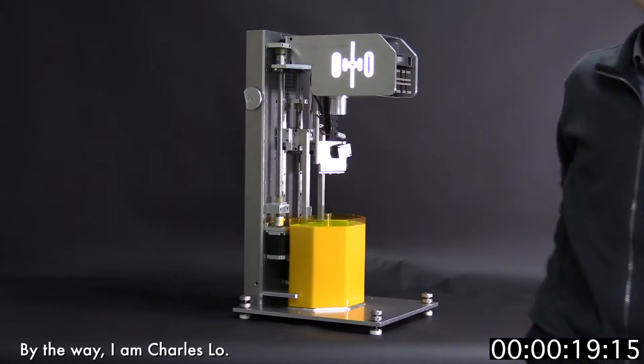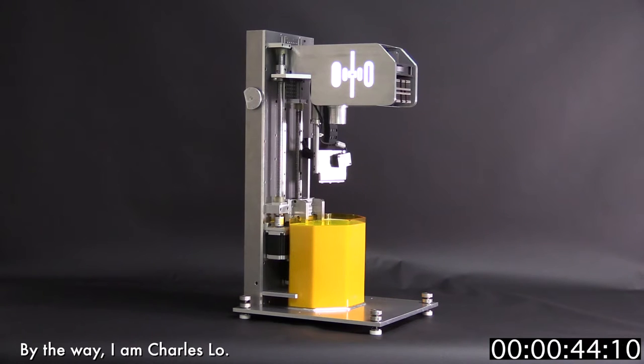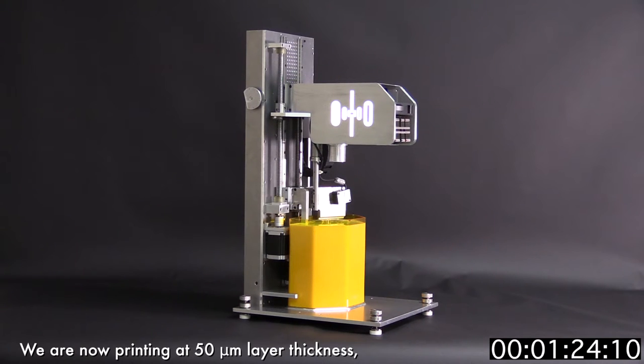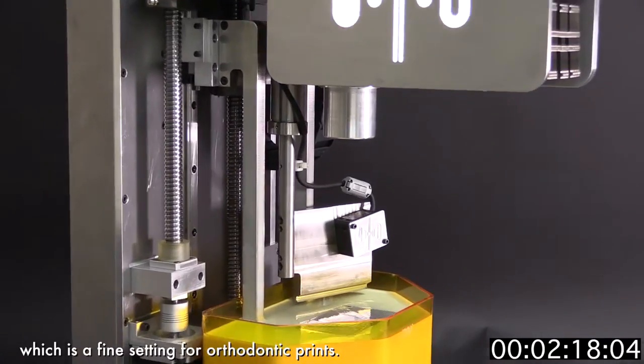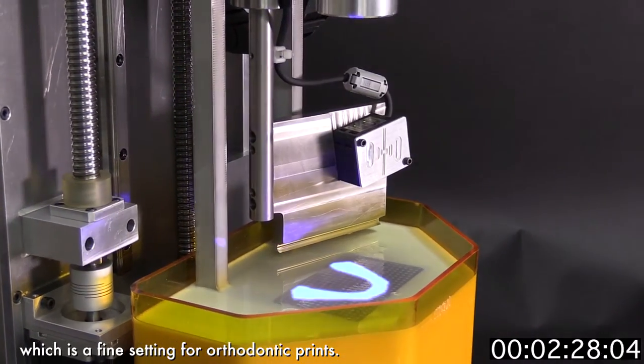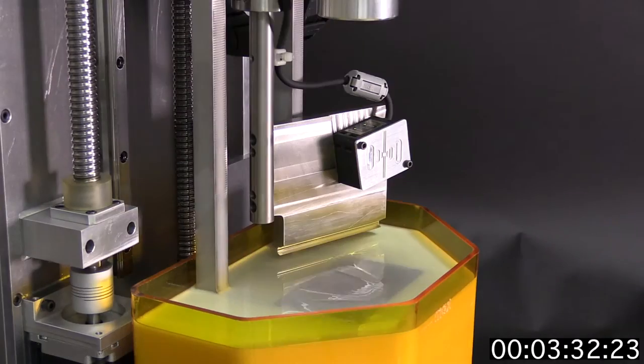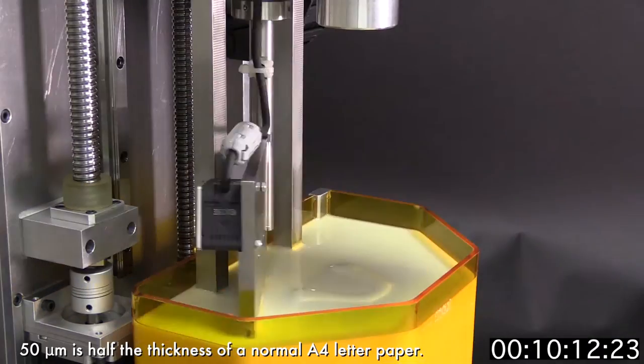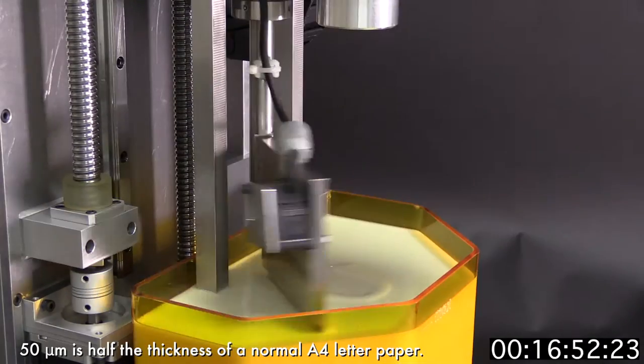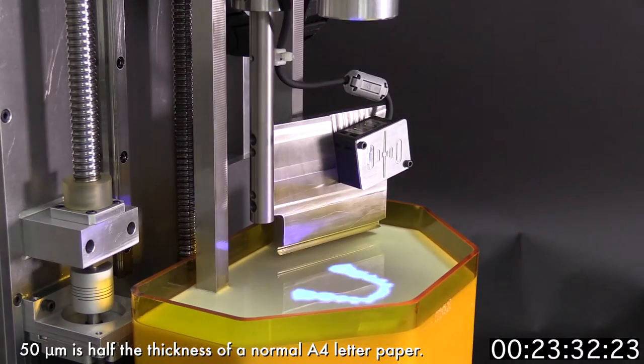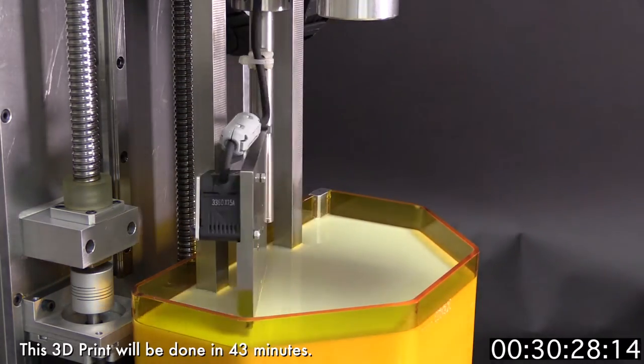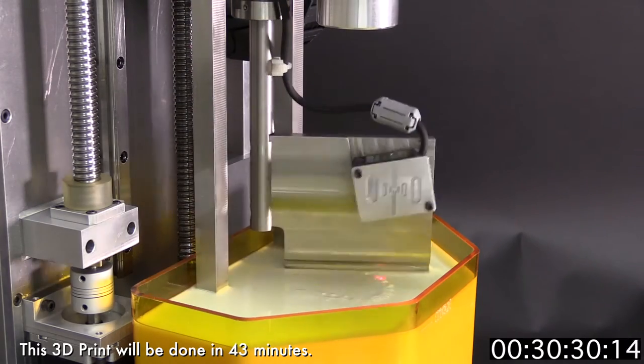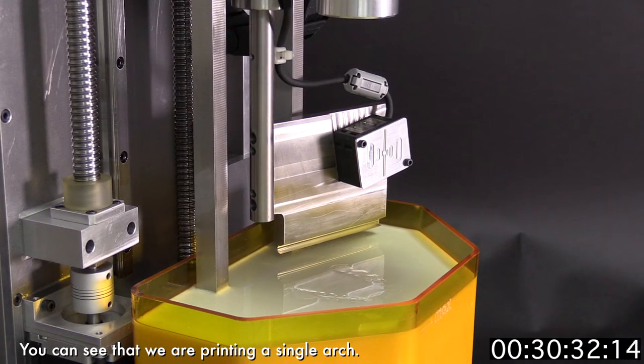By the way, I'm Charles Lo. We are now printing at 50 micrometer layer thickness, which is the fine setting for orthodontic prints. 50 micrometer is half the thickness of a normal A4 letter paper. We are doing high-speed printing here. This 3D print will be done in 43 minutes. You can see that we are printing a single arch.